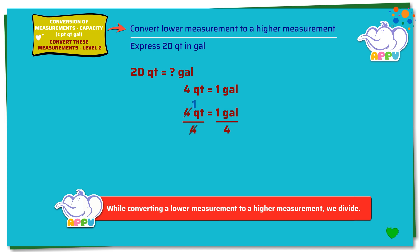Again, 4 divides 4 once. Now we get 1 quart equals 1 gallon by 4.